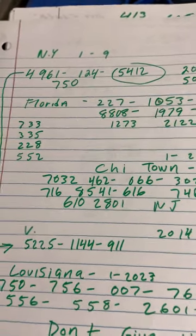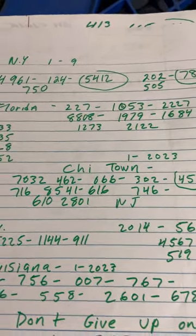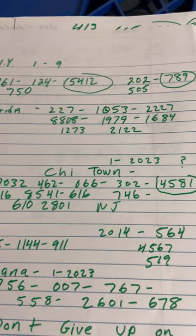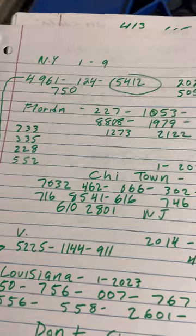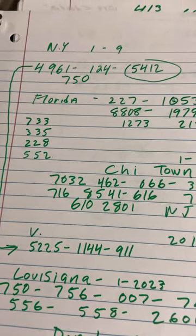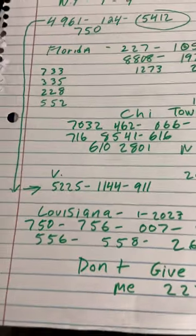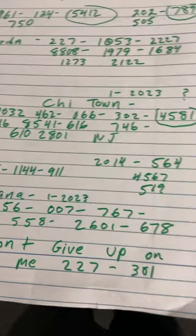Still have some numbers for NY, Florida. 8808. The 888 thing is going on. 2227 in Florida still. Still have those doubles: 733, 228, 552. DC, we're looking for that in the District of Columbia.